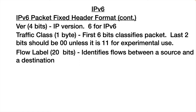IP version 6 built in something called a flow label. A flow is a set of communications between the same two sockets — and a socket is an IP address colon port number. If we have a conversation between our web browser and a web server transferring a number of packets, that is a flow. This has become an important way to do network diagnostics, so it was actually built into the IP version 6 protocol.